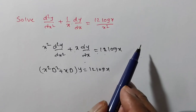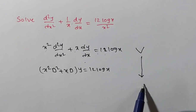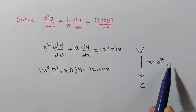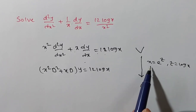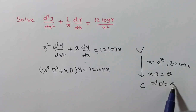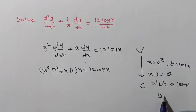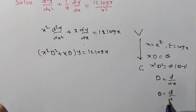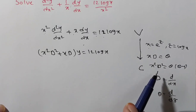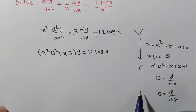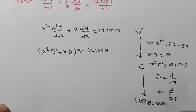Since we cannot solve variable coefficient problems directly, we must convert them to constant coefficients. We substitute x = e^z, where z = log(x). Under this substitution, xD is replaced by θ, and x²D² is replaced by θ(θ−1), where D is differentiation with respect to x and θ is differentiation with respect to z. This converts the equation to the form f(θ)·y = Q(z).